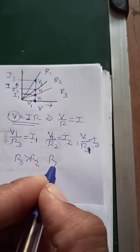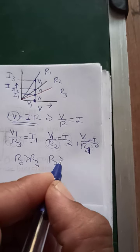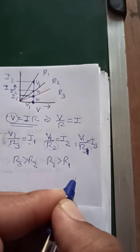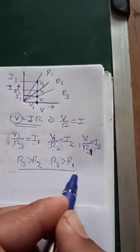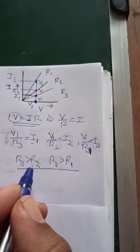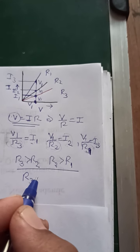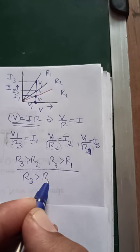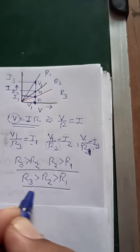So if I3 is greater than I2, and I2 is greater than I1, then R3 is greater than R2, which is greater than R1.